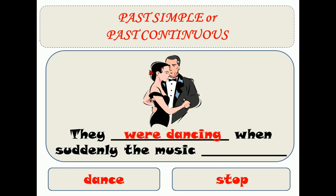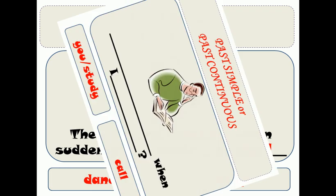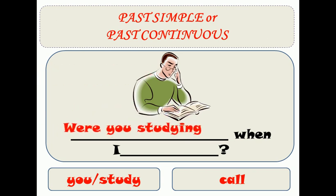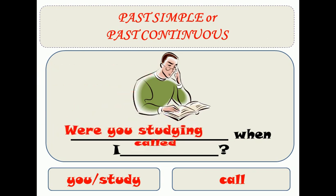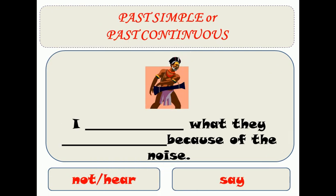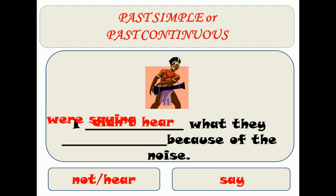They were dancing when suddenly the music stopped — the music was on and suddenly it stopped. Were you studying when I called? That is a short action — what were you doing? I didn't hear what they were saying because of the noise — they were talking but I couldn't hear them.